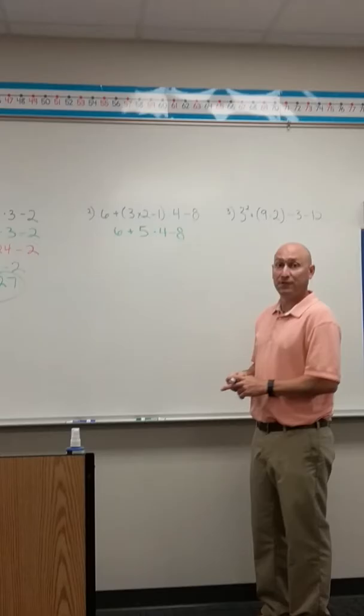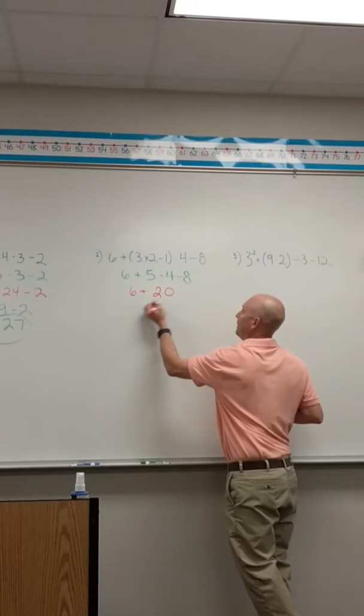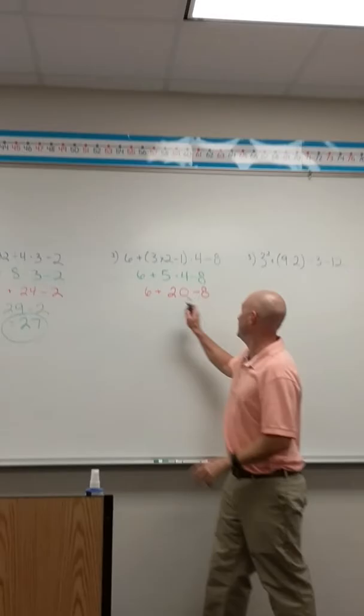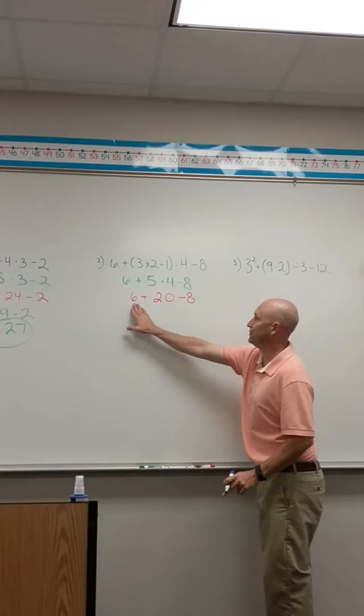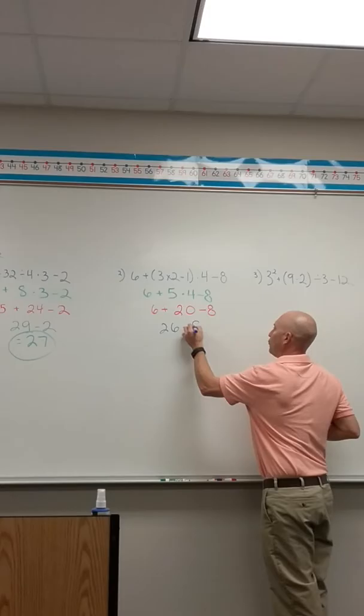Now for my next step, I have addition, multiplication, and subtraction. Multiplication would be my next thing that I do in the order because it comes before addition or subtraction. So I'm going to do 5 times 4, which is 20. Bring down the 6 around it. Bring down the minus 8.